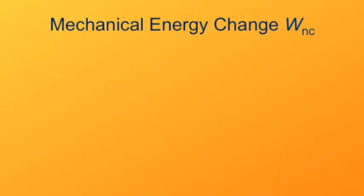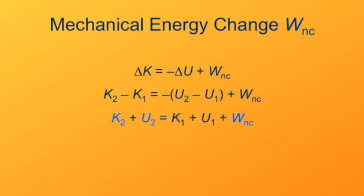Another way to phrase this that's sometimes useful is to start off with what we had before. The change in kinetic energy is equal to negative of the potential energy change, plus the non-conservative work done. So here I've just expanded the delta parts. A little rearrangement. The mechanical energy of state 2 is equal to the mechanical energy of state 1, plus the non-conservative work done going from state 1 to state 2.